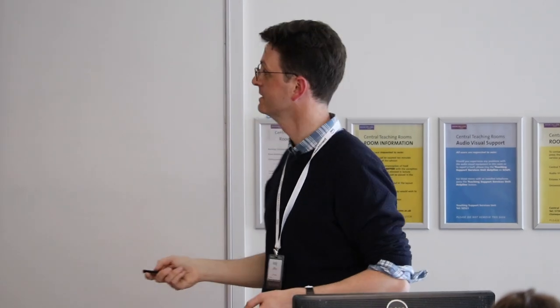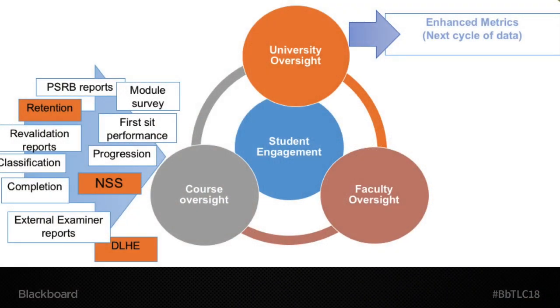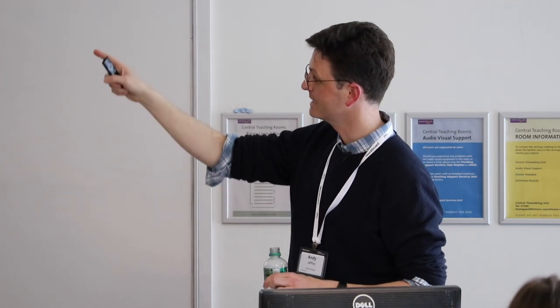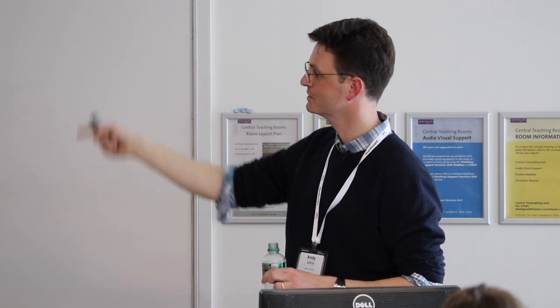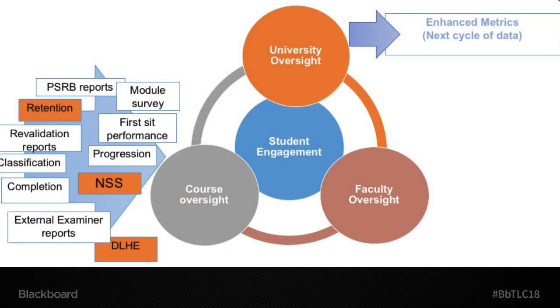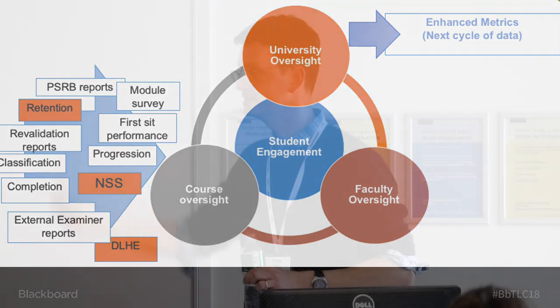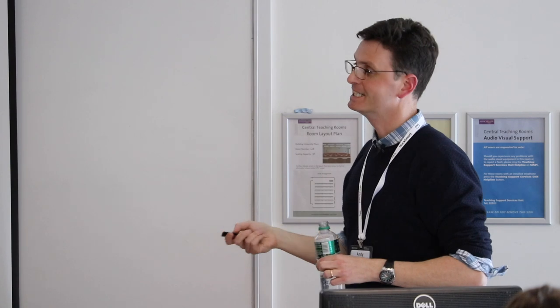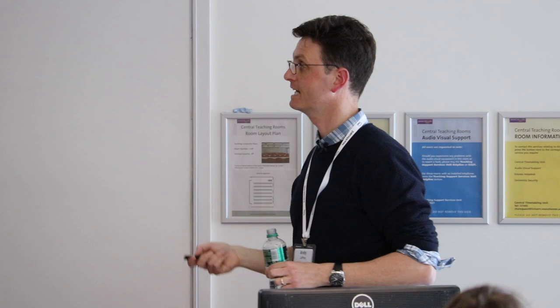A slide from the Quality Management and Audit Unit shows colleagues the number of data sets they can use in conversations about retention: revalidation reports, classification, external examiner reports, DLHE data, NSS, first SIP performance, PSRB. That's a huge amount of data for an academic to engage with and interpret. You can even see the language used — they talk about the 'next cycle of data'; it's very much about annual processes and cycles. There are a lot of PDFs and CSV data sitting there supposedly helping academics make decisions about retention interventions.